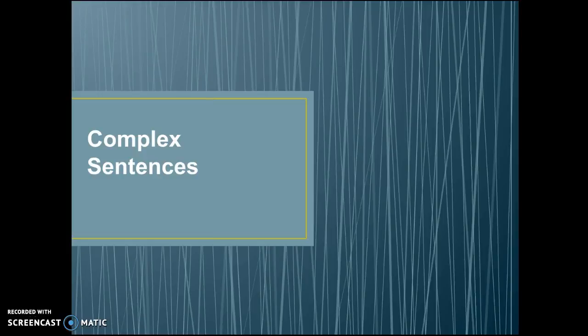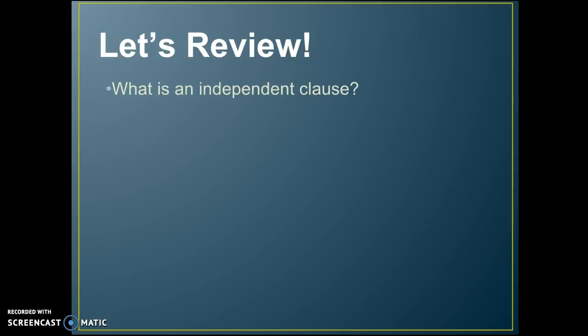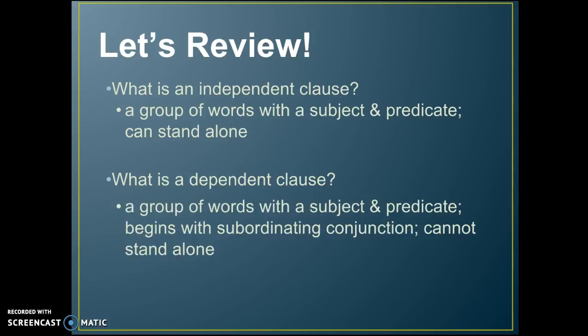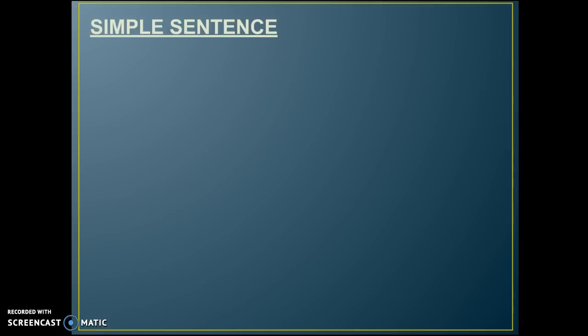We have learned what the two different types of clauses are — simple and compound sentences. Now it's time to move on to complex sentences. A quick review: an independent clause is a group of words with a subject and a predicate that can stand alone. A dependent clause is a group of words with a subject and predicate that begins with a subordinating conjunction and cannot stand alone — it depends on another clause.